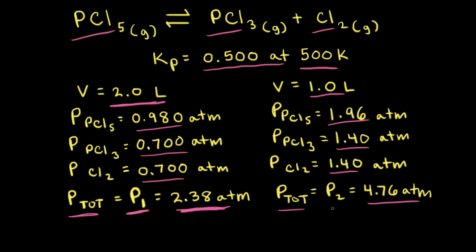This new total pressure is equal to 4.76 atmospheres, and we'll call this total pressure P2. When the volume was two liters, the reaction was at equilibrium. By decreasing the volume to one liter and doubling the pressure, we've introduced a stress to the system, and at this moment the reaction is not at equilibrium.